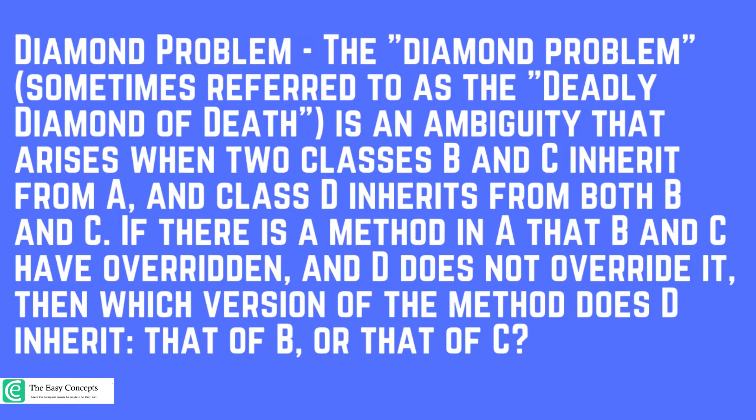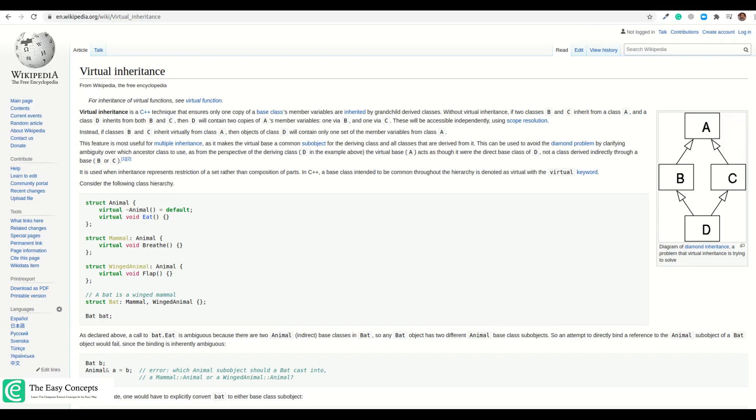inherit from a class A and then class D inherits from both B and C. So if there are some methods in A that B and C have overwritten, and D does not override it, then it's very confusing or ambiguous which version D should call, or which version should D inherit. We are going to discuss that problem now in much detail and also discuss its solution.